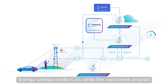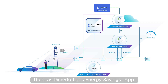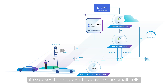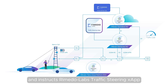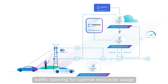Energy Savings mode is on, while users have assured continuous service. Then, as Rometo Labs' Energy Savings R-APP receives data indicating an increase in traffic via the O-1 interface, it exposes the request to activate the small cells and instructs Rometo Labs' Traffic Steering xApp to activate service-based and mobile load-balancing traffic steering for optimal resource usage.